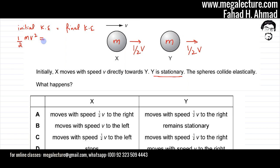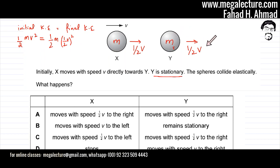Now let's find the final kinetic energy. Both spheres are moving with a velocity of half V. So the final KE is half M times (half V) squared for each sphere. Multiplying by 2 for both spheres gives half M times one-quarter V squared times 2, which simplifies to one-quarter M V squared.